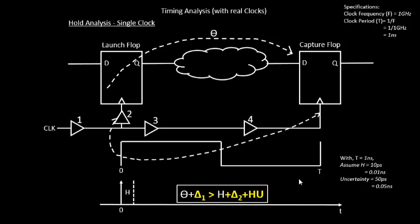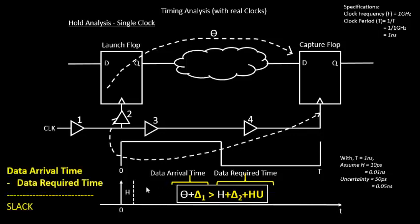If you want to give a name to these equations, the right-hand side will be called the data required time and the left-hand side will be called the data arrival time. In this case, the definition of slack is a bit different: slack equals data arrival time minus data required time, because we expect the data arrival time to be greater than the data required time. This is in contrast with setup timing analysis, where the data required time was expected to be greater than data arrival time.